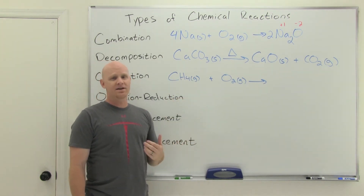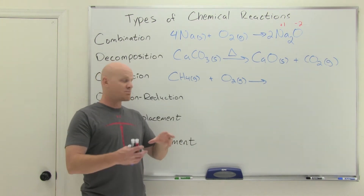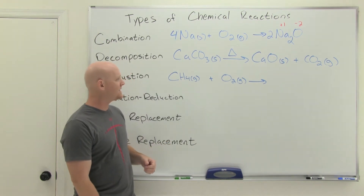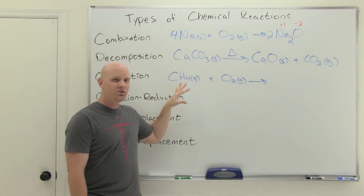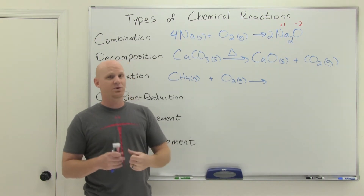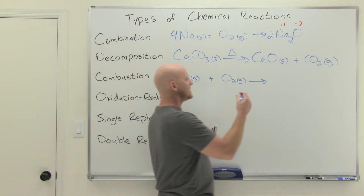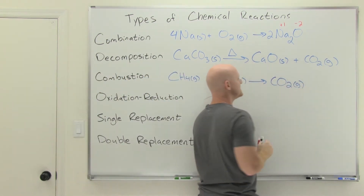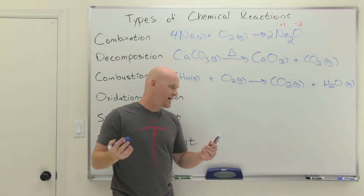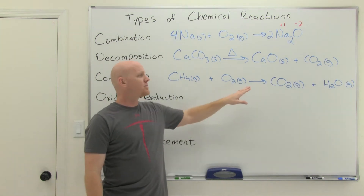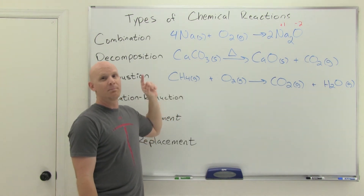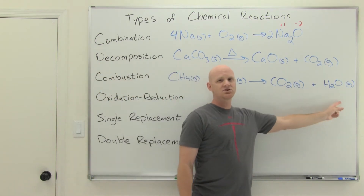You can combust a variety of things — magnesium forms a nice bright flash when you burn it. But the big thing to worry about with combustion is hydrocarbons. A hydrocarbon contains only hydrogen and carbon. When we talk about combustion in a chemistry context, we're specifically talking about combustion of hydrocarbons. When you combust a hydrocarbon, you get the same two products every time: CO2 (the fully oxidized form of carbon) and H2O (the fully oxidized form of hydrogen). Your other reactant will always be O2, and products will always be CO2 and H2O.